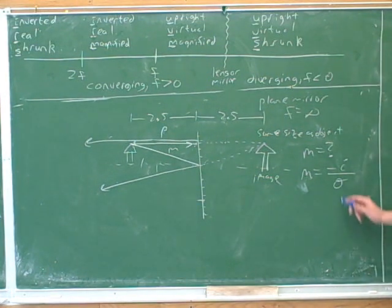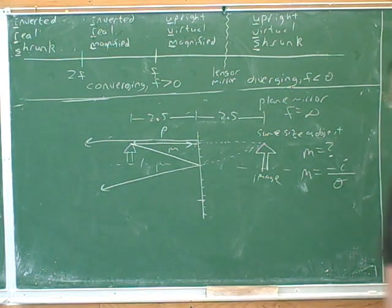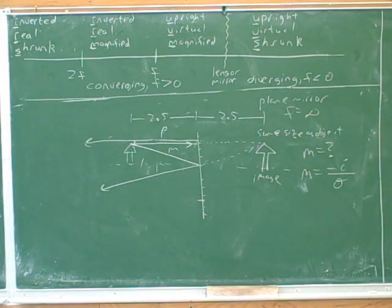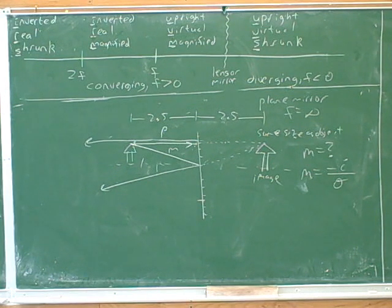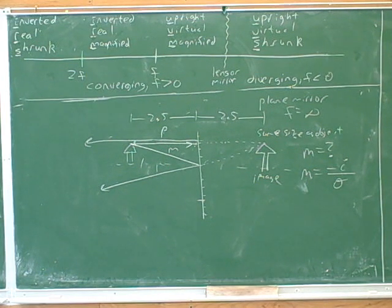I'm going to keep putting these curly Q's on the O's so they don't look like zeros. Let's work that out. Take your time. M equals 1.